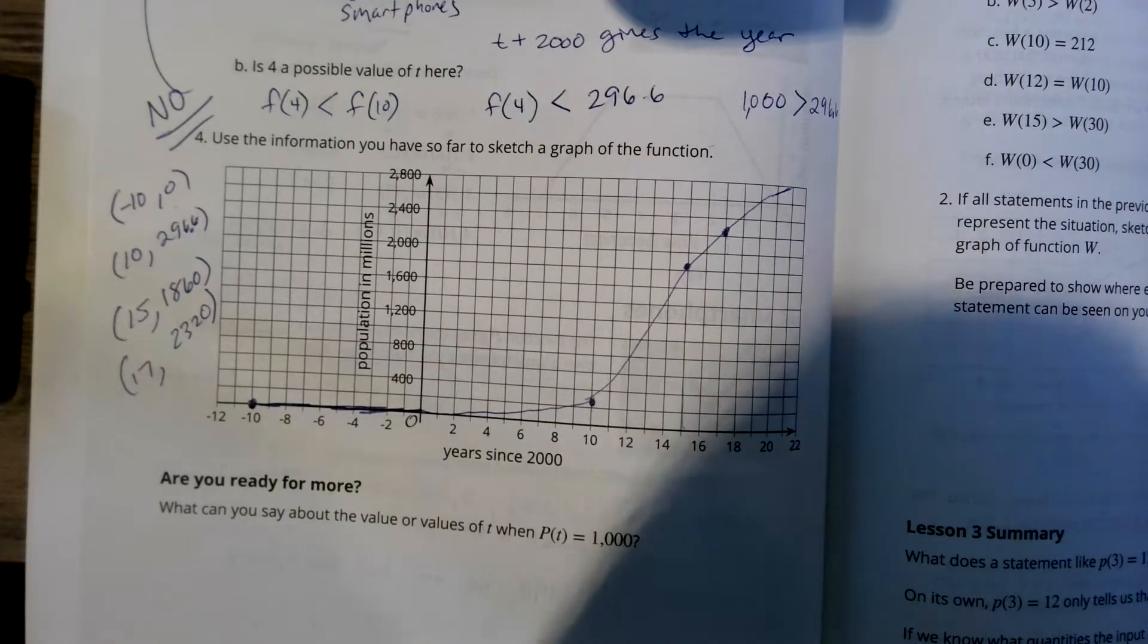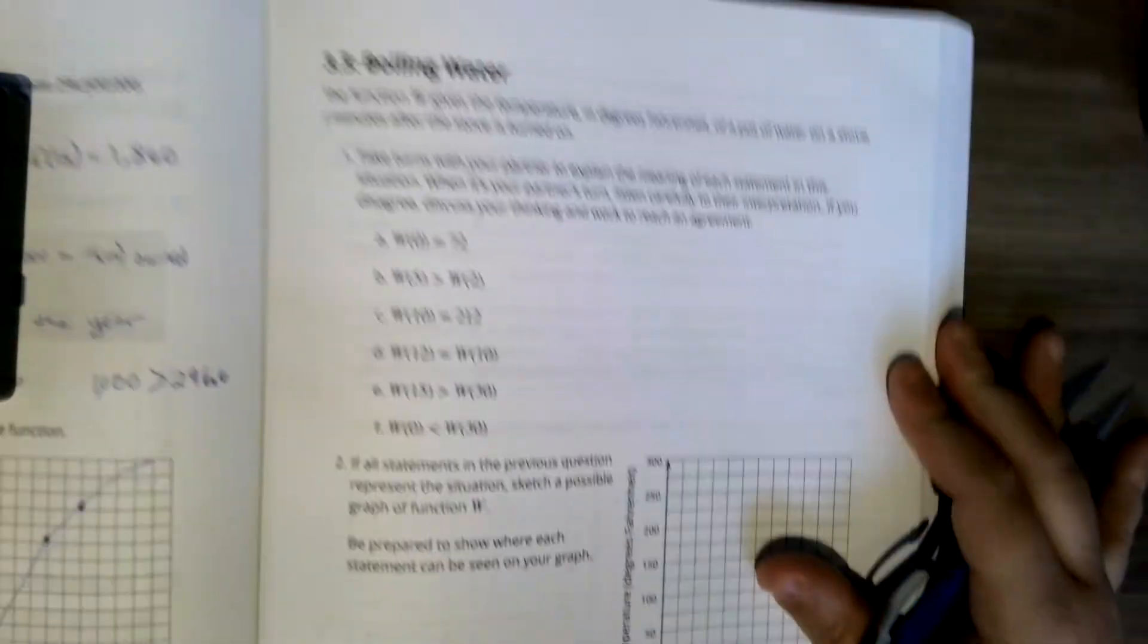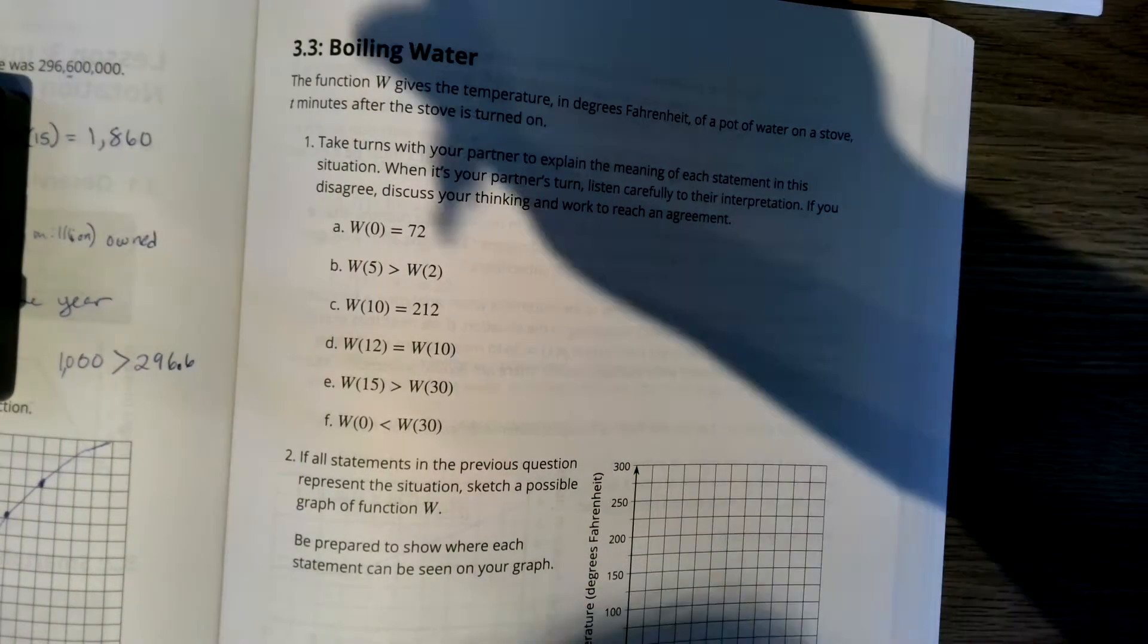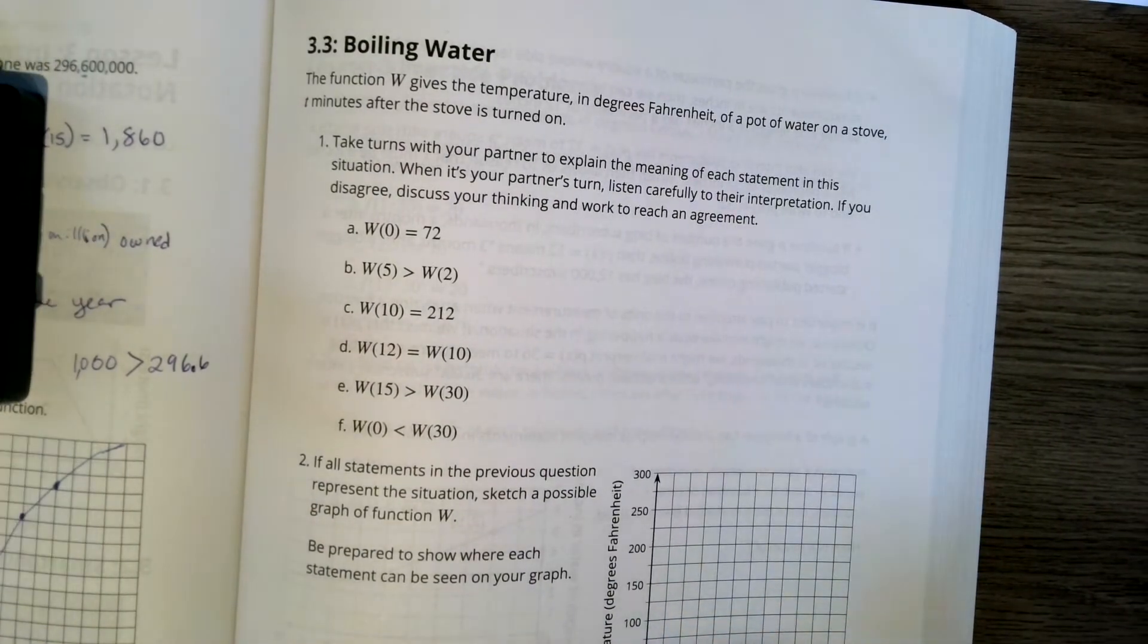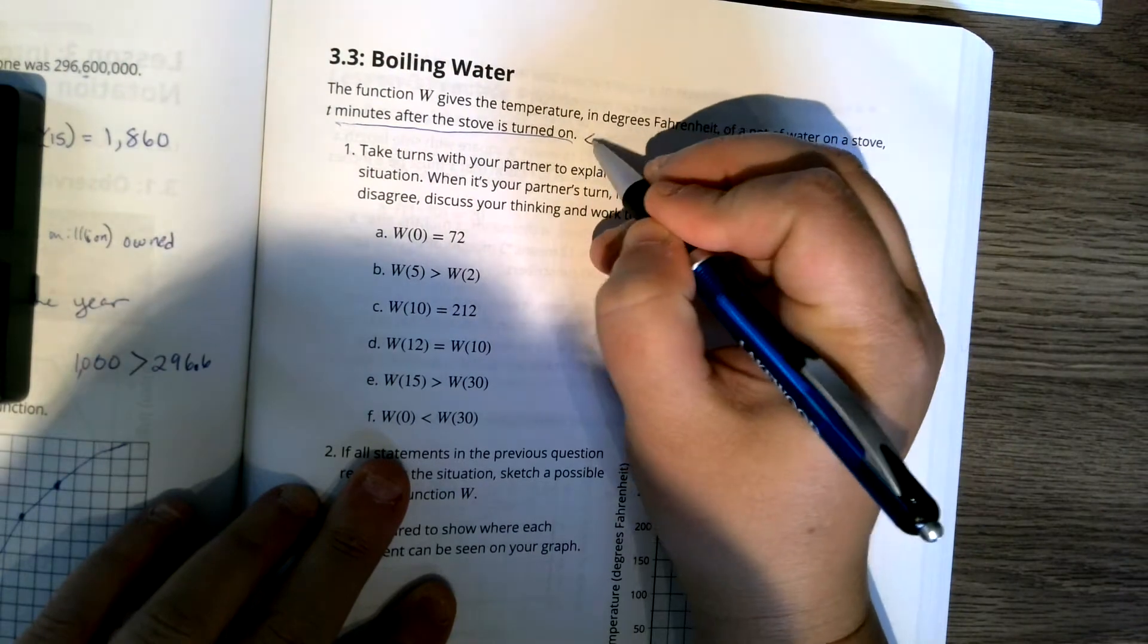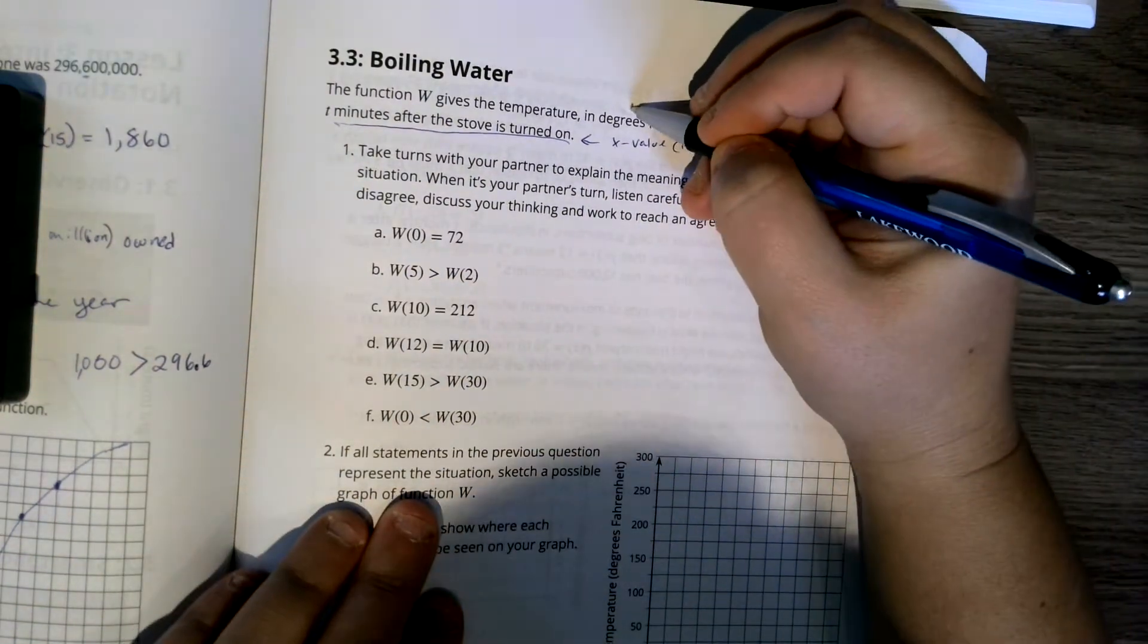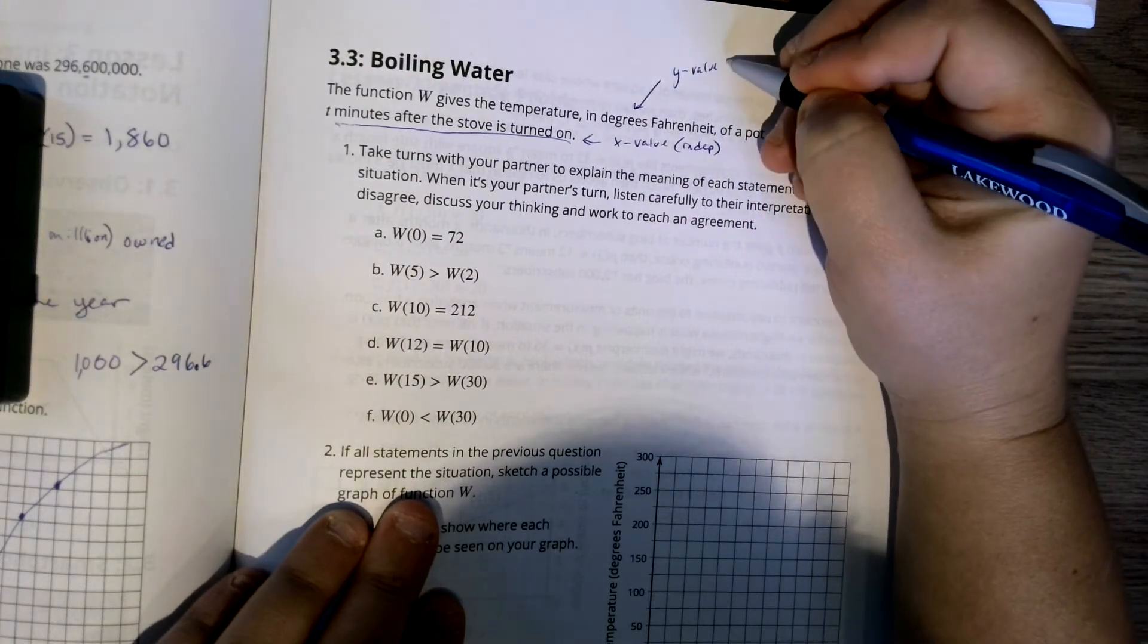We're going to move on to 3.3 Boiling Water. This will be our last problem for lesson three. The function W gives the temperature in degrees Fahrenheit of a pot of water on a stove t minutes after the stove is turned on. So t minutes after this, that's our x value, our independent variable. The degrees Fahrenheit is our y value, which is our dependent variable.